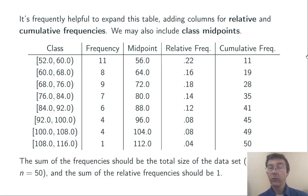The sum of the frequencies should be the total size of the dataset. The sum of the relative frequencies should always be 1. And the very last value in the column of cumulative frequencies should be the size of the dataset again. 50 in this case.